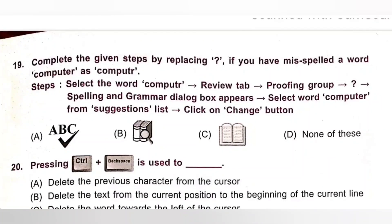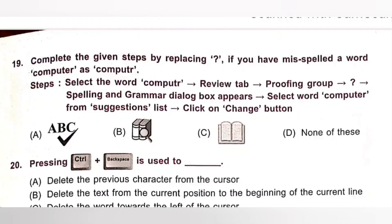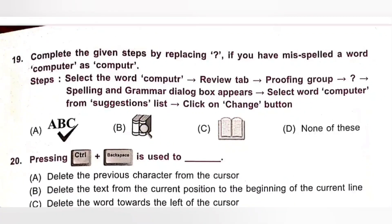Question 19: Complete the given steps. If you have misspelled the word computer as COMPUTR, select the word, go to the Review tab, Proofing group, then click on — which opens the Spelling and Grammar dialog box. Select the word computer from the suggestion list and click the Change button. The question mark is filled by option A — the Spelling and Grammar tool. Option A is the correct answer.